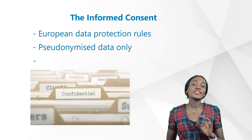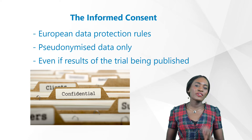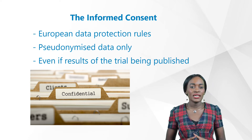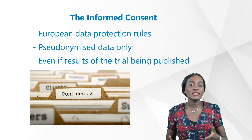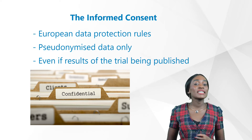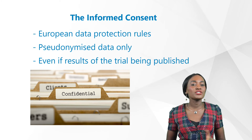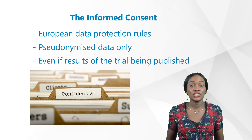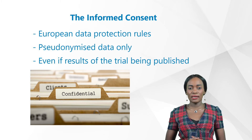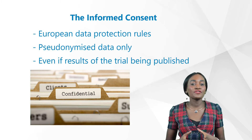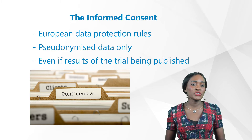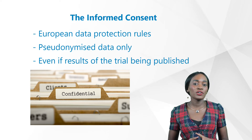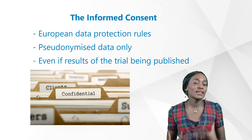With regard to the access to personal trial data of subjects, some very strict European data protection rules need to be explained. For example, in Germany there is the legal requirement to use pseudonymized data only. A commonly used procedure for pseudonymizing would be the use of so-called dummy initials and the date of birth of the subject — for example, using the last letter of the surname and first name as dummy initials — which makes it impossible for the sponsor to identify a certain subject.